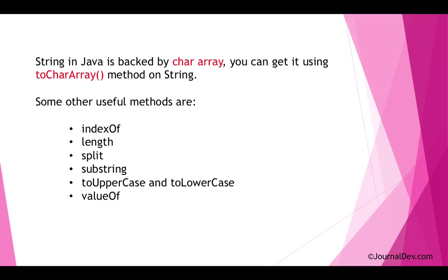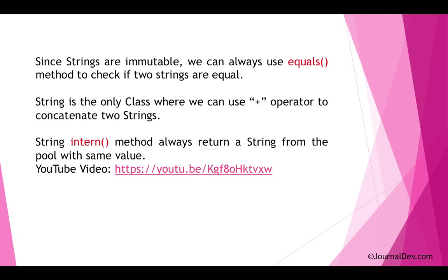Then there is valueOf(). It's an important method because sometimes you need to create a string where the value is an integer like 5 or a boolean true. Using valueOf() we can create that. It is also overloaded, so you can pass different kinds of data types — check the String class documentation for details. Since string is immutable, always use the equals() method to check if two strings are equal, and avoid using == to compare string values. String is also special in that the + operator can be used to concatenate two strings.